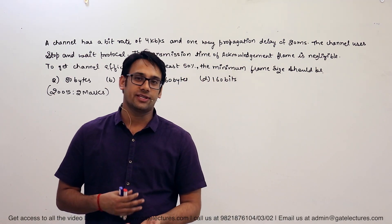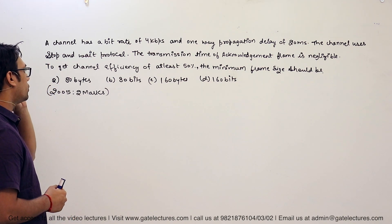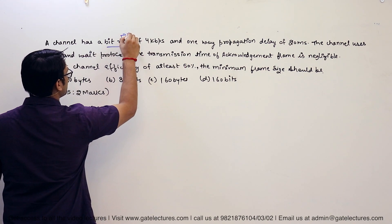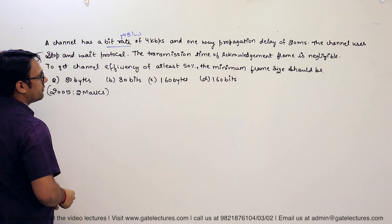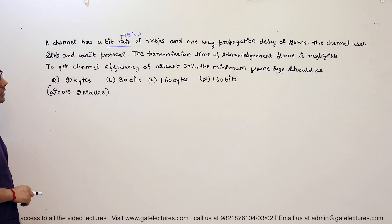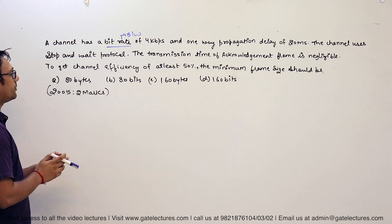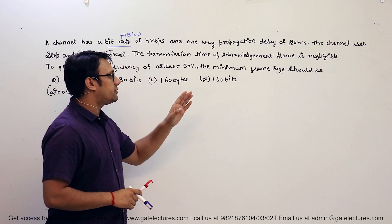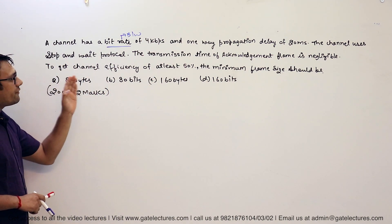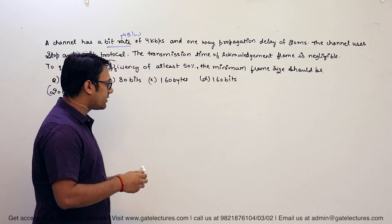Let us look at this question again — this is the same type of question. They are saying that the channel has a bit rate of 4 kbps; bit rate means they are giving us the bandwidth of the channel, and a one-way propagation delay of 20 milliseconds. The channel uses stop-and-wait protocol, which is the simple flow control protocol. The transmission time for the acknowledgement frame is negligible.